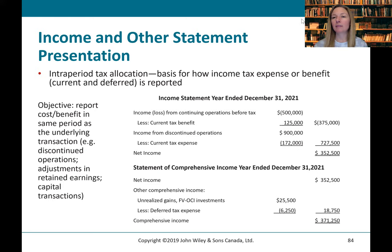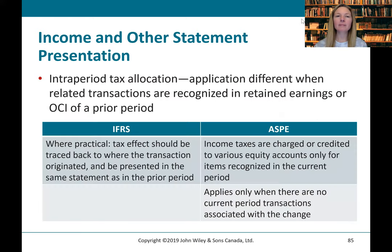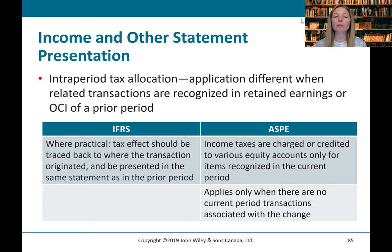It is actually a deferred tax liability related to those OCI items, and the total tax would bring our comprehensive income up to $371,250. For income and other statement presentation, IFRS requires that when practical, the tax effect should be traced back to where the transaction originated — making sure we present in the same statement where related transactions are recognized, such as retained earnings or OCI of a prior period. Under ASPE, income taxes are charged or credited to various equity accounts only for items recognized in the current period.